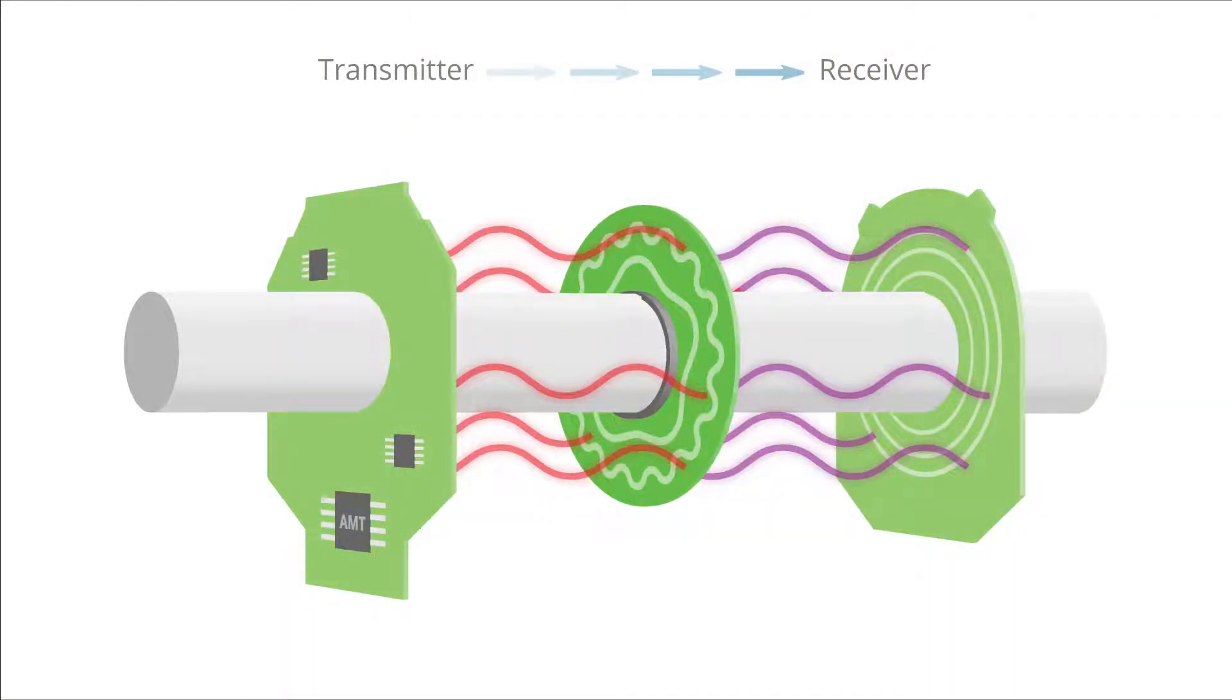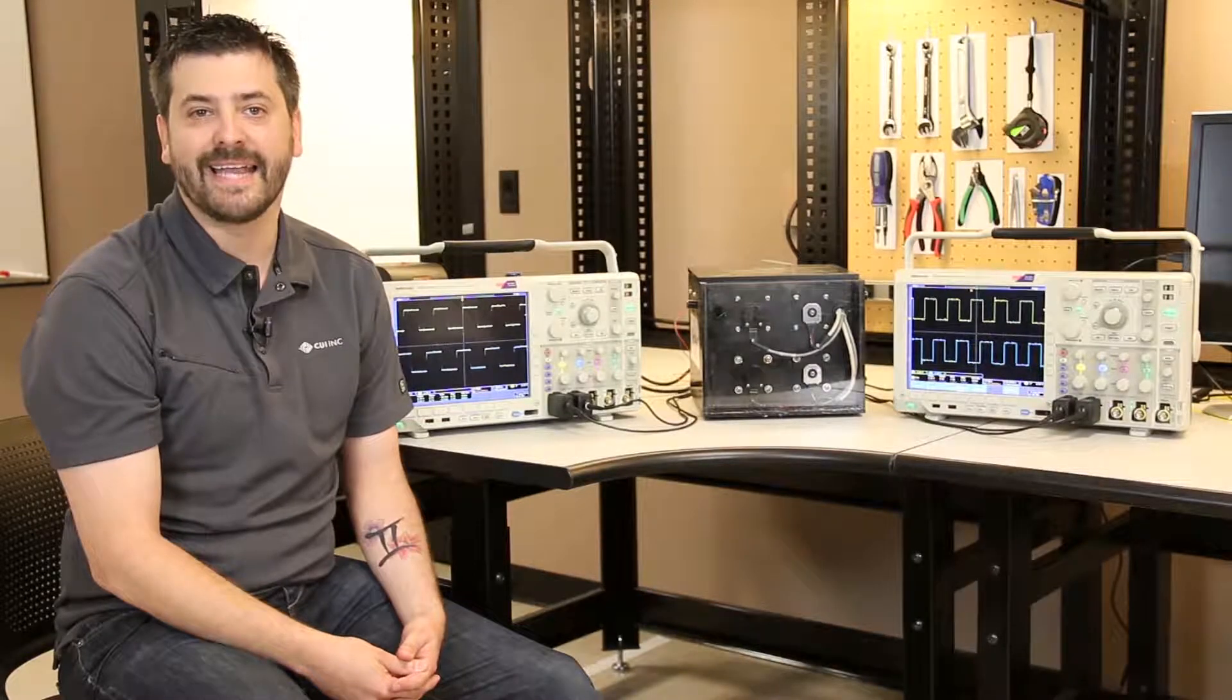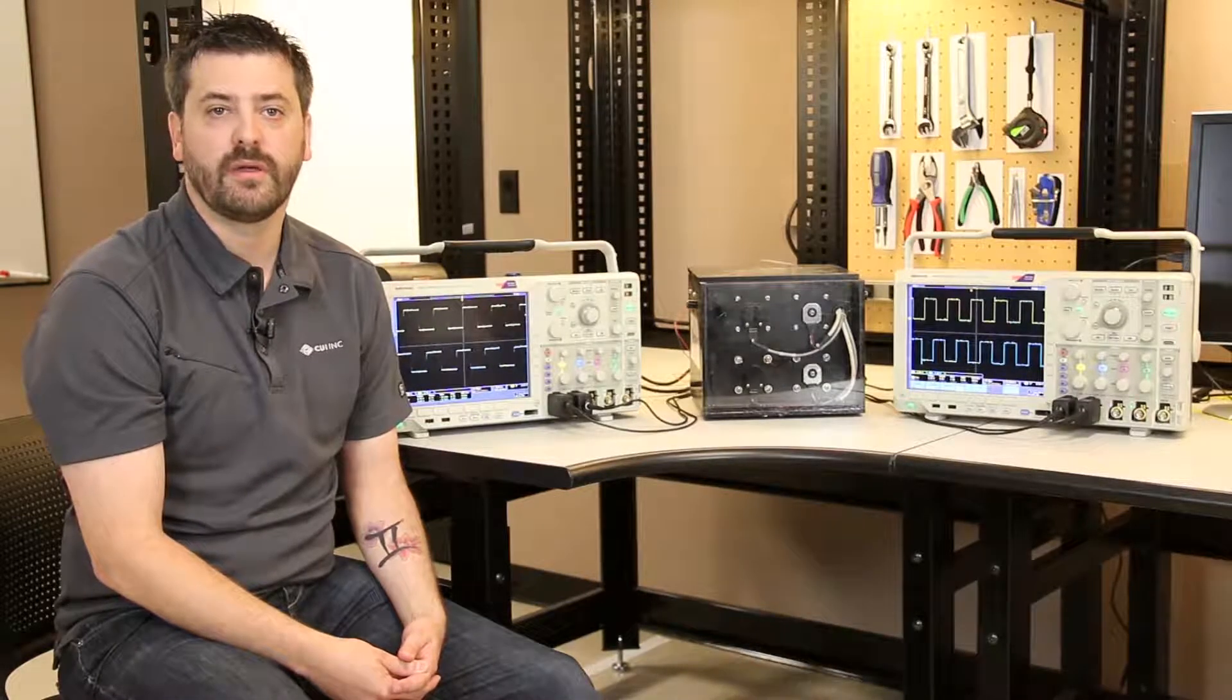An AMT encoder, being capacitive-based, is not susceptible to airborne contaminants or any oil that's in the system, making it ideal for a lot of motion control applications.